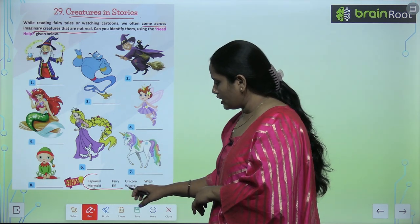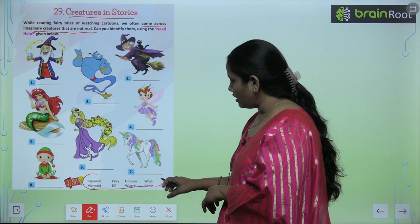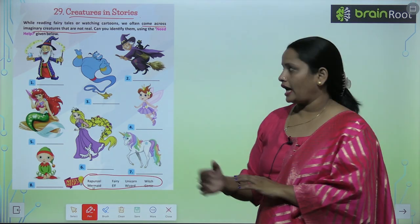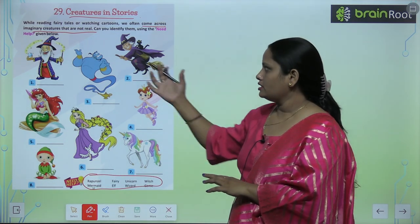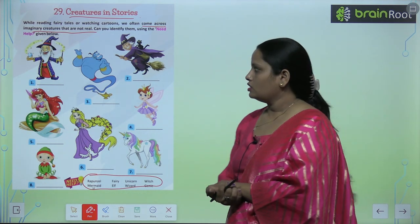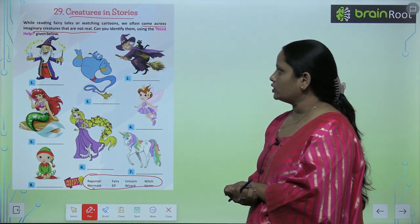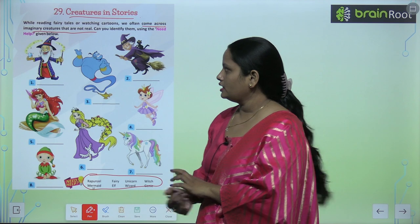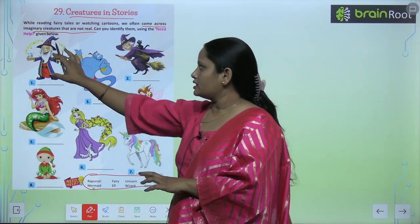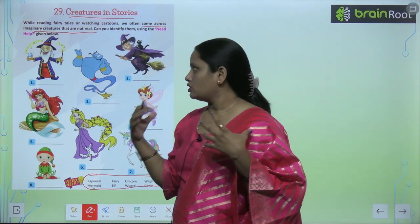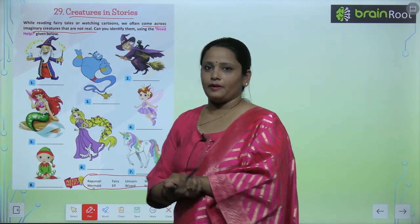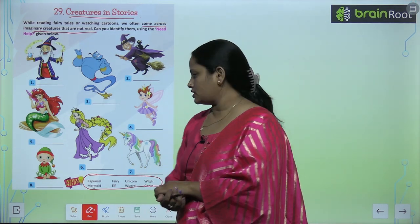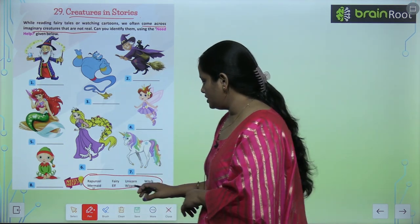What do we need to do? We have to find out the characters that are given here. So the first picture is of — you can see — this is a witch type.